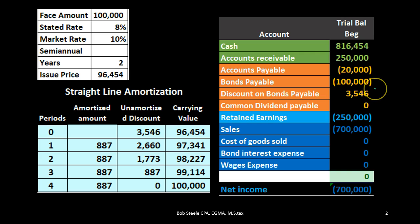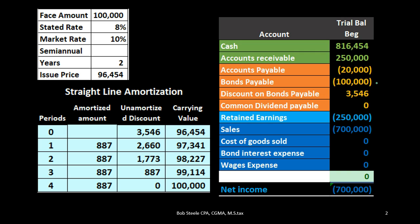As we go through the process of the bond, we typically make bond payments at 8% — the stated rate — on the face amount of the bond, divided by 2 because it's every six months rather than a full year. We're only going to be paying interest, not paying back the principal. However, we do have this discount that we need to deal with. It needs to go away by the end of the bond.